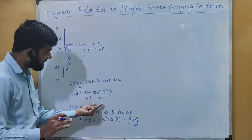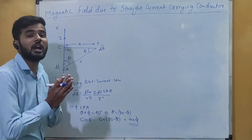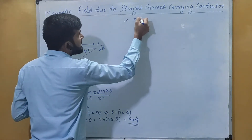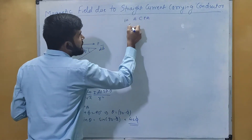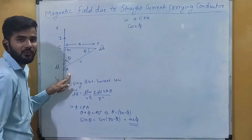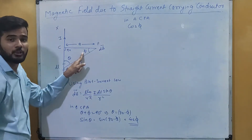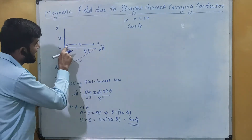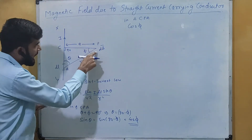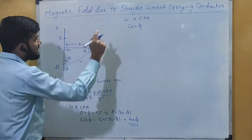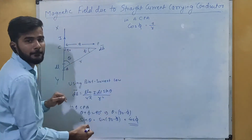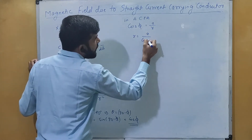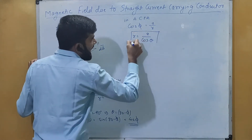Now we will replace the value of R. Using the same triangle CPA and the identity for cos phi, which is base upon hypotenuse. So cos phi equals A by R, and from here R equals A by cos phi. So we have the value of R.